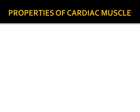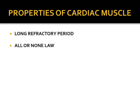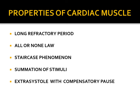Now let's see the properties of cardiac muscle. The properties are: long refractory period, all or none law, staircase phenomena, summation of stimuli, and extrasystole with compensatory pause. The first four properties are studied on a quiescent heart, while the last property — extrasystole with compensatory pause — is studied on a beating heart.